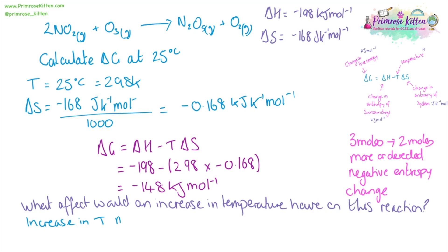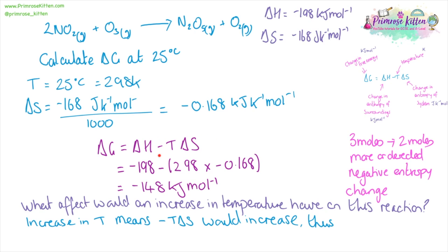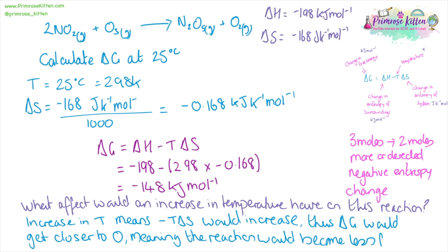We can further expand this question by asking what an increase in temperature would have on this reaction. If we increased the temperature, the T delta S term would increase and become more negative. As this gets more negative, delta G gets closer to zero, so the reaction would become less feasible.